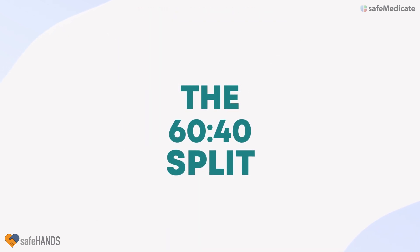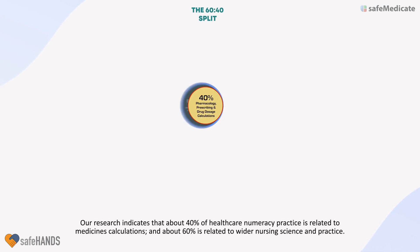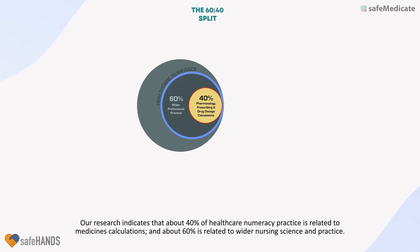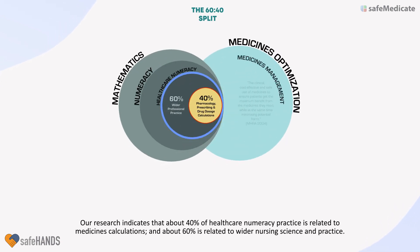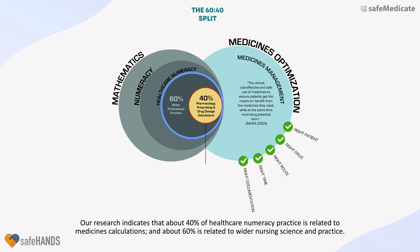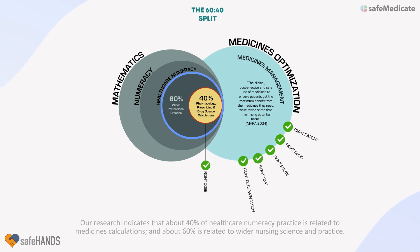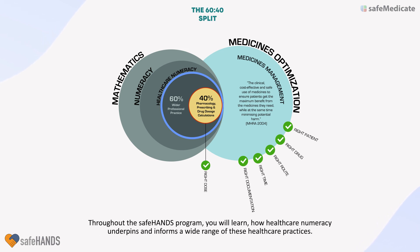The 60/40 split. Our research indicates that about 40 percent of healthcare numeracy practice is related to medicines calculations, and about 60 percent is related to wider nursing science and practice. Throughout the Safe Hands program, you will learn how healthcare numeracy underpins and informs a wide range of these healthcare practices.